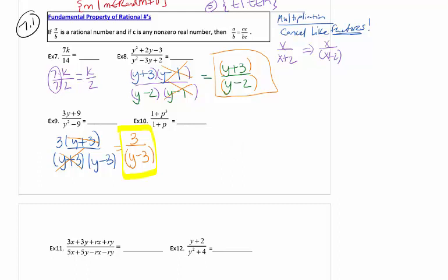We mentioned in chapter 6 that you would also see cubes on tests 3 and 4 — here's an example. This is a sum of cubes in the numerator. When we factor a sum of cubes, we get a binomial and a trinomial: (1 + p) times (1 − p + p²). Multiply the first parentheses terms together and flip the sign — same sign, opposite sign, always positive. The denominator has nothing to factor, but put it in parentheses so you see it as a pair.